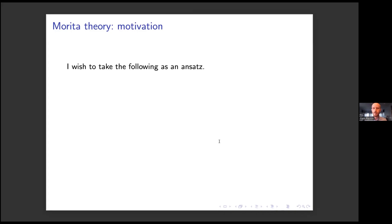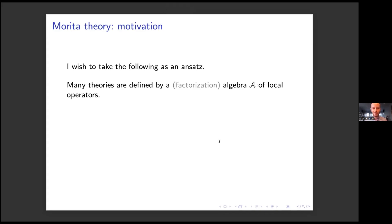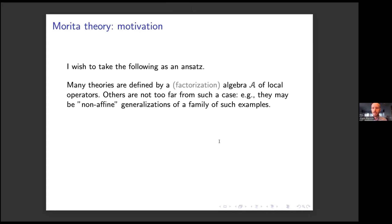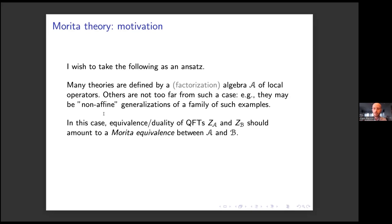So I want to take the following as kind of an ansatz. Many theories are defined by an algebra of local operators, which I'll call A, and technically it should be a factorization algebra — that's the kind of thing I have in mind. Others are sort of non-affine generalizations of such examples. So in this case, I want to say that the equivalence or duality between quantum field theories attached to two algebras of local operators should be a sort of Morita equivalence between A and B. I want to take Morita equivalence as an ansatz for modeling what we mean when we talk about duality between quantum field theories.